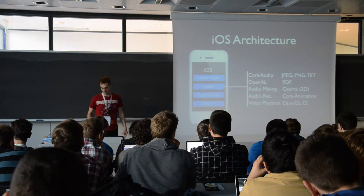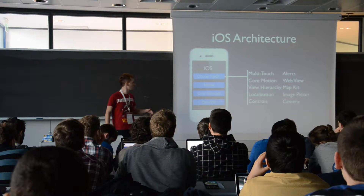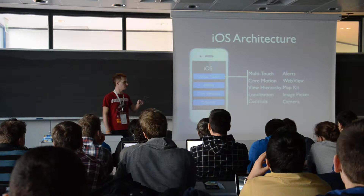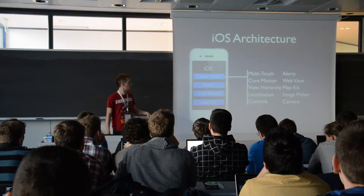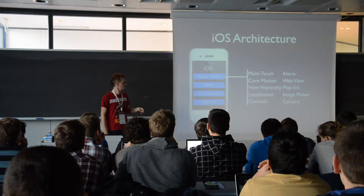Then the top layer is the Cocoa Touch layer. Cocoa Touch is the library that manages everything related to the touch interface. For example, maps, multi-touch for applications, map, filter, camera — all these functionalities are in the Cocoa Touch library.